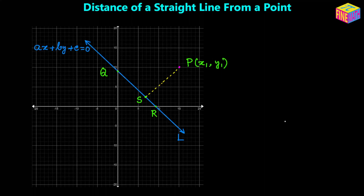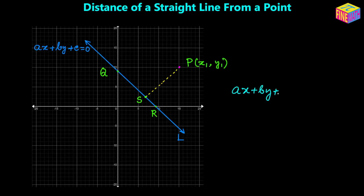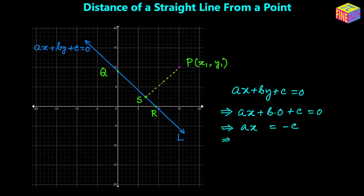First let's find out the coordinates of R and Q — the two intercepts. R is the x-intercept and Q is the y-intercept. The equation of the straight line is Ax plus By plus C equals 0. For the x-intercept, we use y equals 0, so Ax plus B times 0 plus C equals 0, giving Ax equals negative C, so x equals negative C over A. The coordinates of R are therefore negative C over A comma 0.